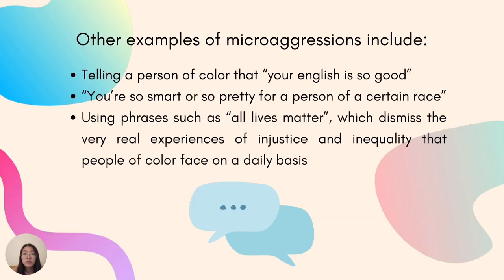Other examples of microaggressions include telling a person of color that their English is so good, telling someone they're so smart or so pretty for a person of a certain race, and using phrases such as 'all lives matter,' which dismiss the very real experiences of injustice and inequality that people of color face on a daily basis.